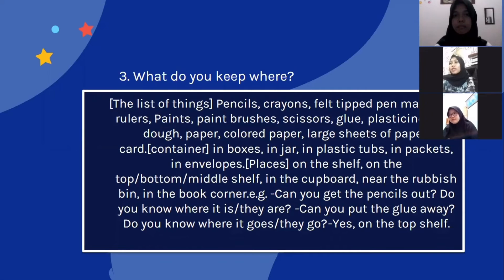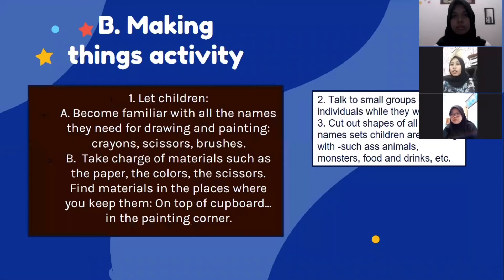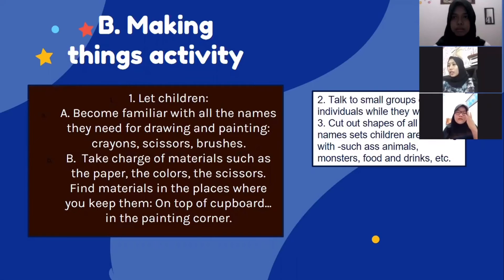Making things activity. First, let children become familiar with all the names they need for drawing and painting — like crayons, scissors, and brushes. Take charge of materials such as the paper, the colors, and the scissors. Find materials in the place where you keep them, like on top of cupboards or in the painting corner. Talk to small groups or individuals while they work. Cut out shapes of all the items children are working with, such as animals, monsters, food, and drink.